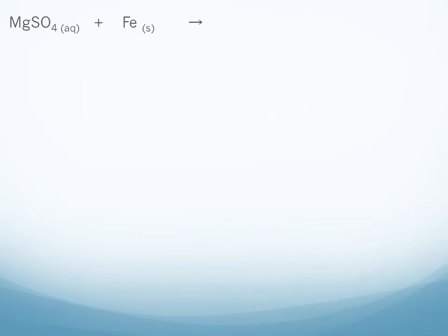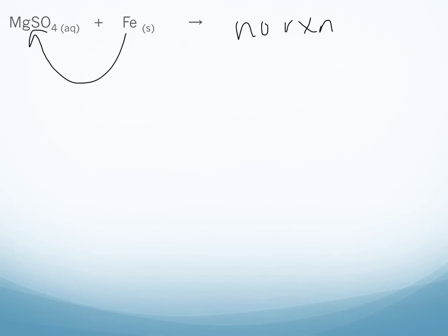Finally, we need to see if iron can replace magnesium in a single replacement reaction. If we find iron on the activity series, we see that magnesium is not below it, so this one is no reaction as well. Hopefully now you know how to predict if a single replacement reaction will occur using the activity series and how to predict and label the products. If not, please go back and re-watch this video.